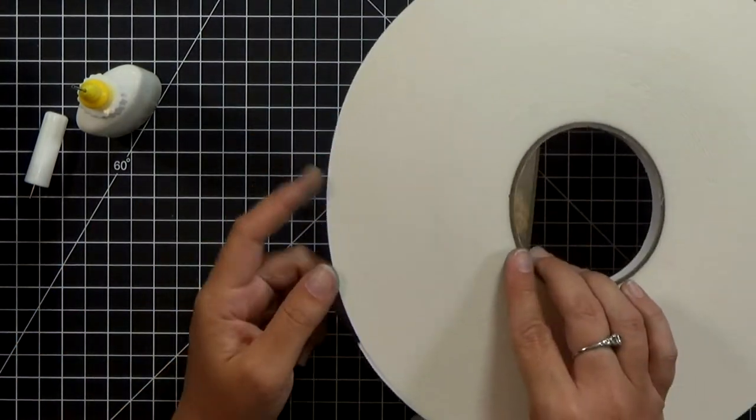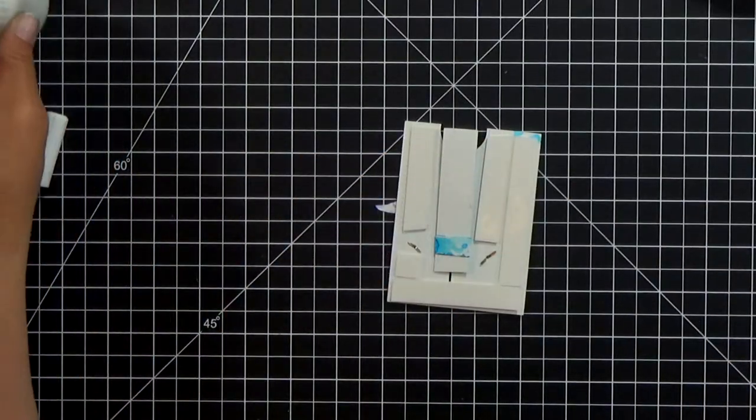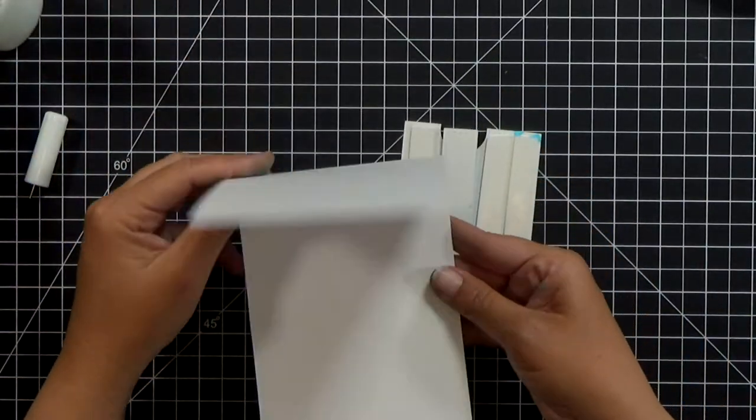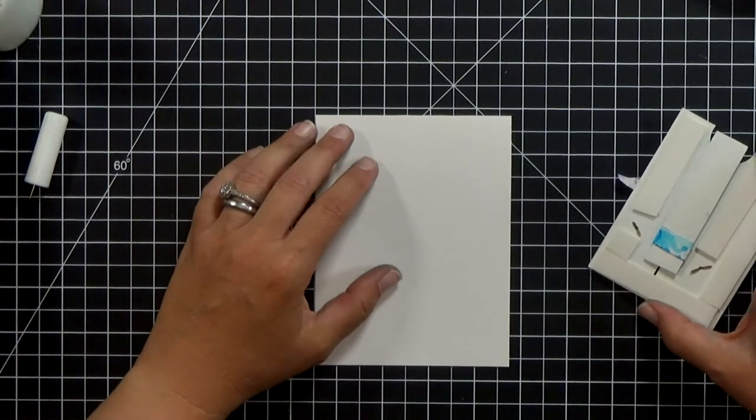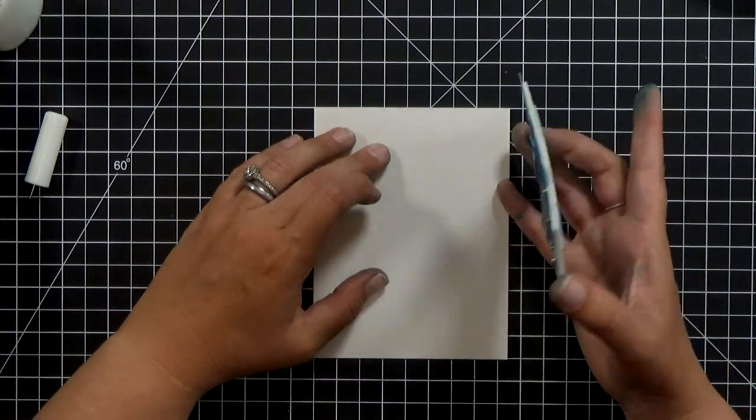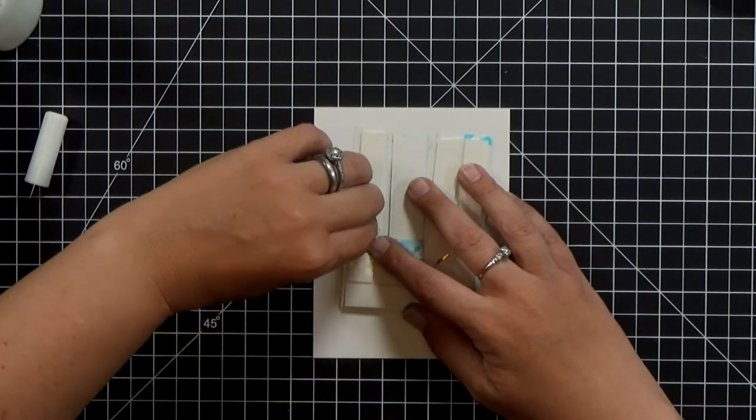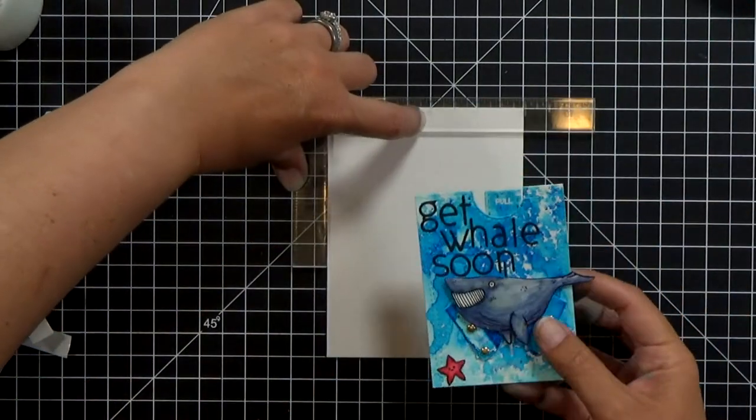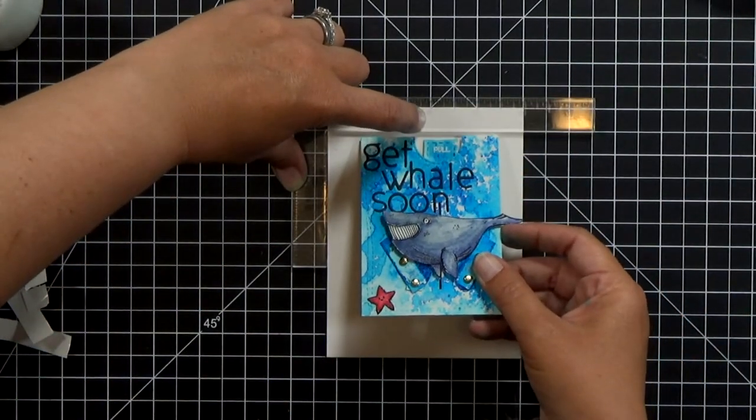Now I've got foam tape that I just put on the back. I went and created a little channel for the pull tab and I did not put any foam on the back of the pull tab.